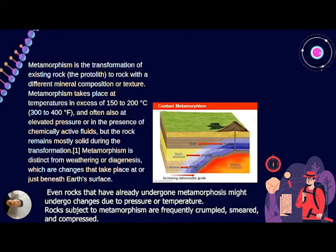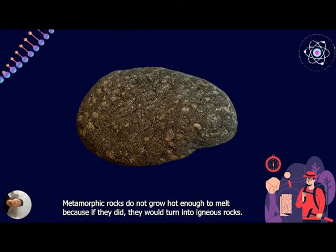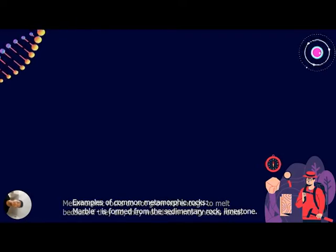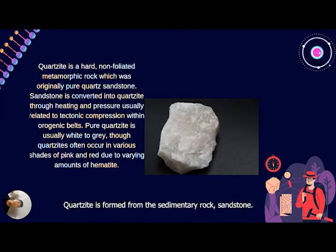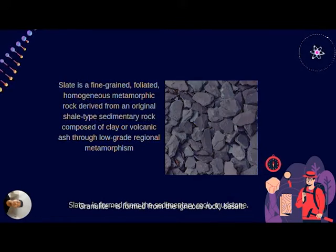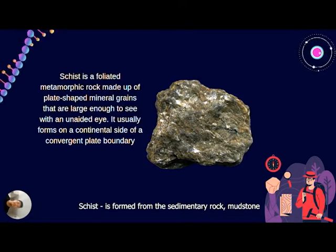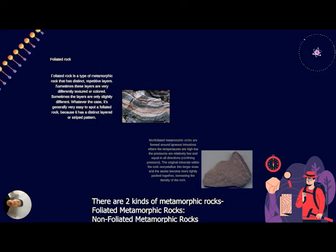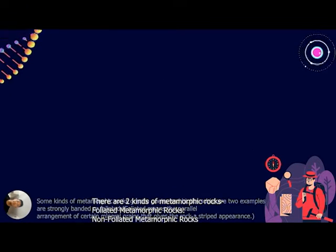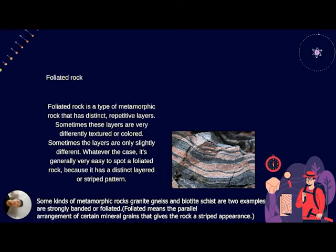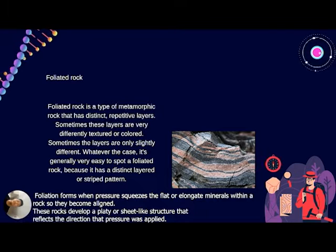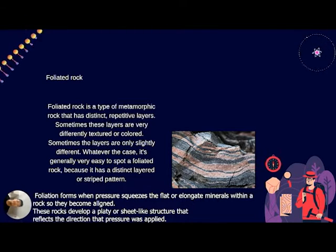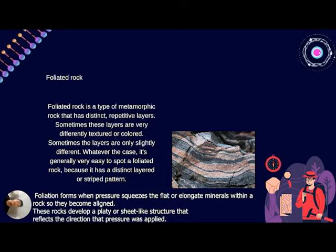Rocks subject to metamorphism are frequently crumbled, smeared, and compressed. Metamorphic rocks must not get hot enough to melt, because if they did, they would turn into igneous rocks. Examples of common metamorphic rocks: marble is formed from sedimentary limestone; quartzite is formed from sedimentary sandstone; slate is formed from sedimentary shale; and granulite is formed from the igneous rock basalt. There are two kinds: foliated metamorphic rocks and non-foliated metamorphic rocks. Foliated rocks have a striped appearance from the parallel arrangement of mineral grains, forming sheet-like structures that reflect the direction of pressure applied.